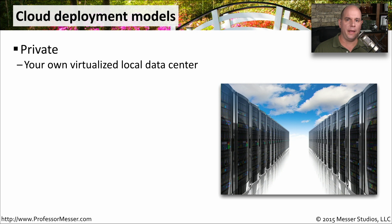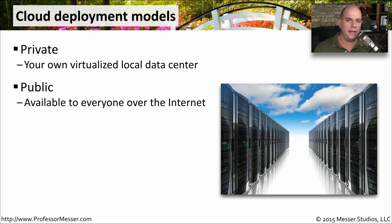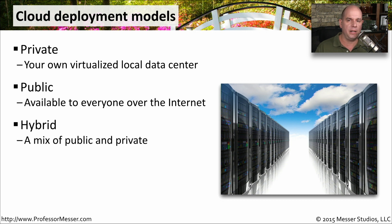There are many different ways to deploy a cloud technology. It doesn't have to be all public out on the internet, and it doesn't all have to be private within your organization — there are different flavors in between. A very common implementation is a private cloud, which might run in your own data center but can be accessed anywhere in your organization. The other side is the public cloud, where anybody on the internet can gain access to those services. Sometimes it's a mix between the two, with a hybrid cloud offering that combines a bit of public and a bit of private cloud.